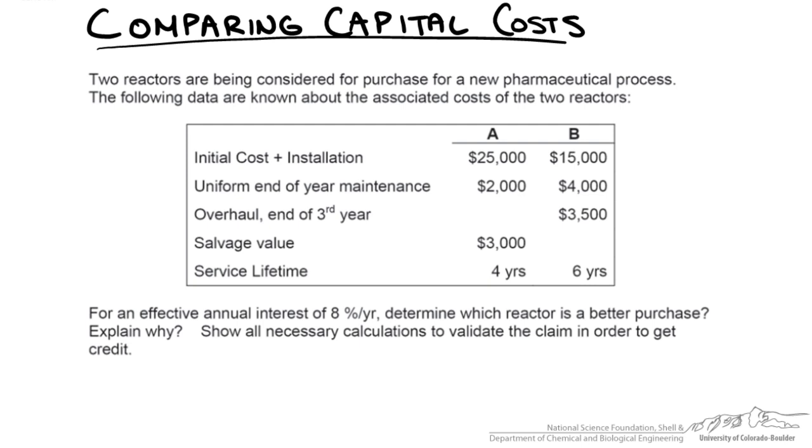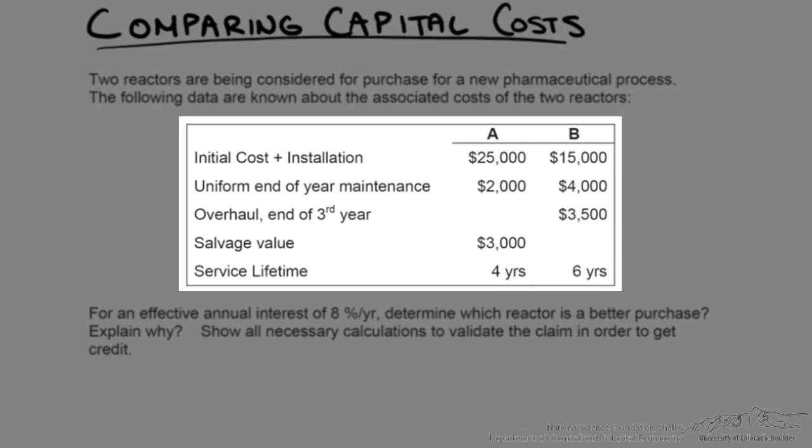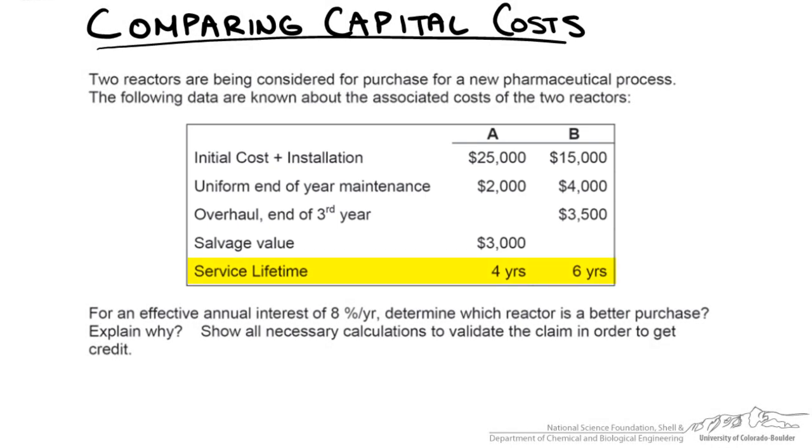So we have two reactors that are being considered for purchase and you can see the information regarding these two different reactors, reactor A and reactor B. Now they have different service lifetimes. For an effective annual interest of 8% per year we want to determine which reactor is a better purchase and explain why.